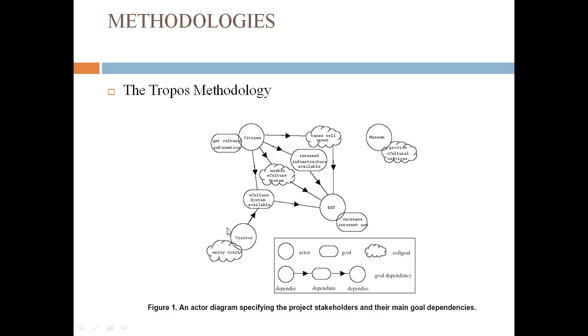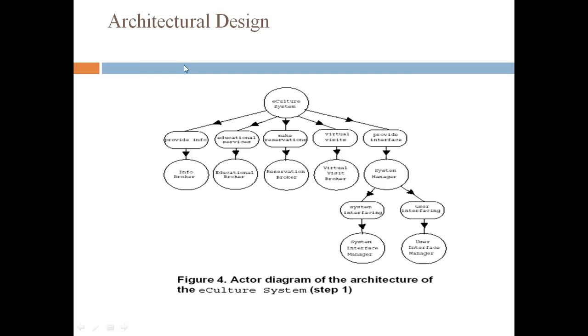Like for visitor: enjoy visit. For a museum: provide cultural services. This is the task of an actor and this is the soft goal, while this is the goal. Like increase internet use, citizen get cultural information.